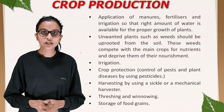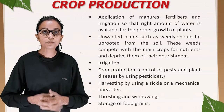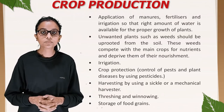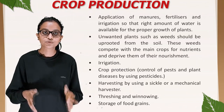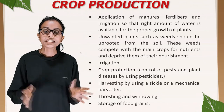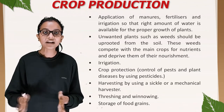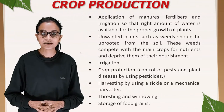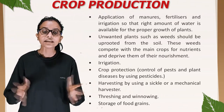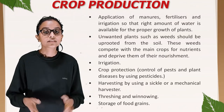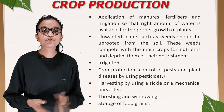Unwanted plants such as weeds should be uprooted from the soil, as they compete with the main crops for nutrients and deprive them of their nourishment. Crop protection involves control of pests and plant diseases by using pesticides. Harvesting is done using a sickle or a mechanical harvester, followed by threshing, winnowing, and storage of food grains.